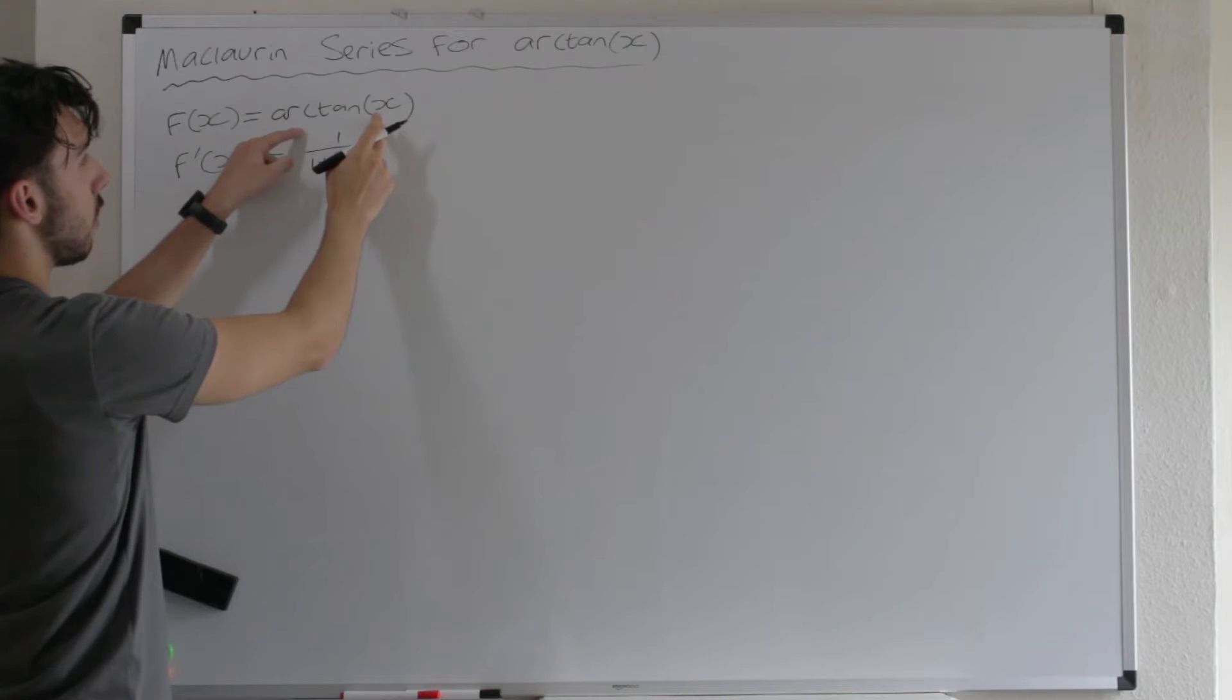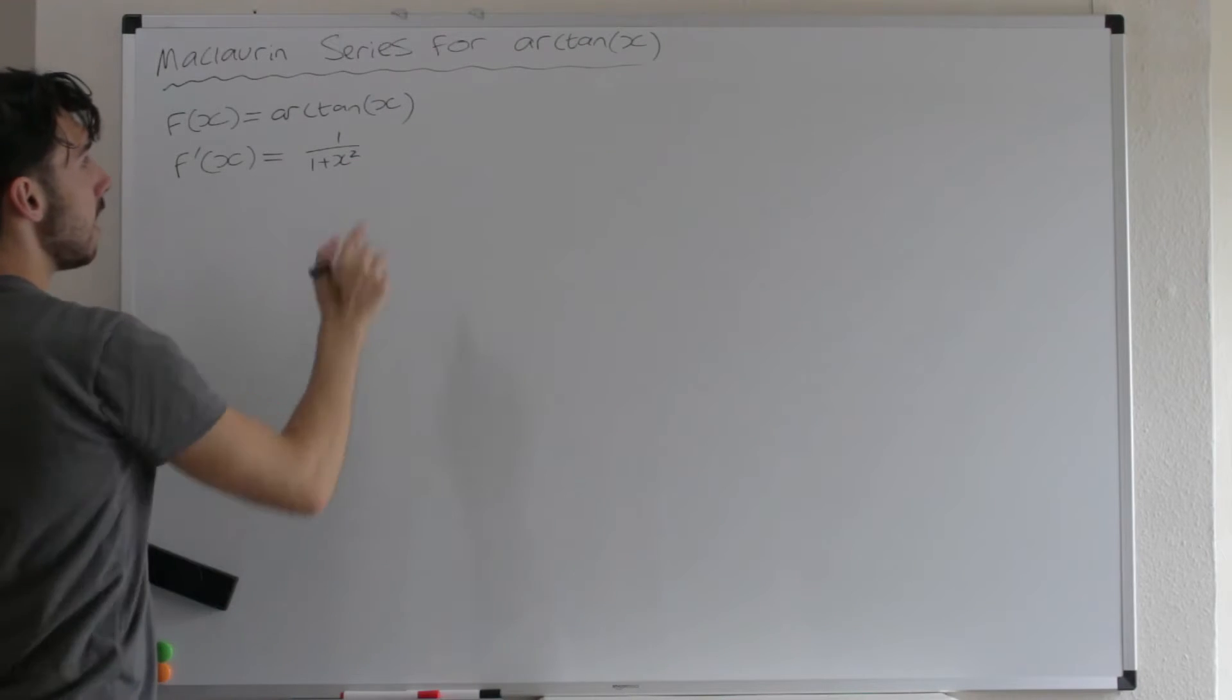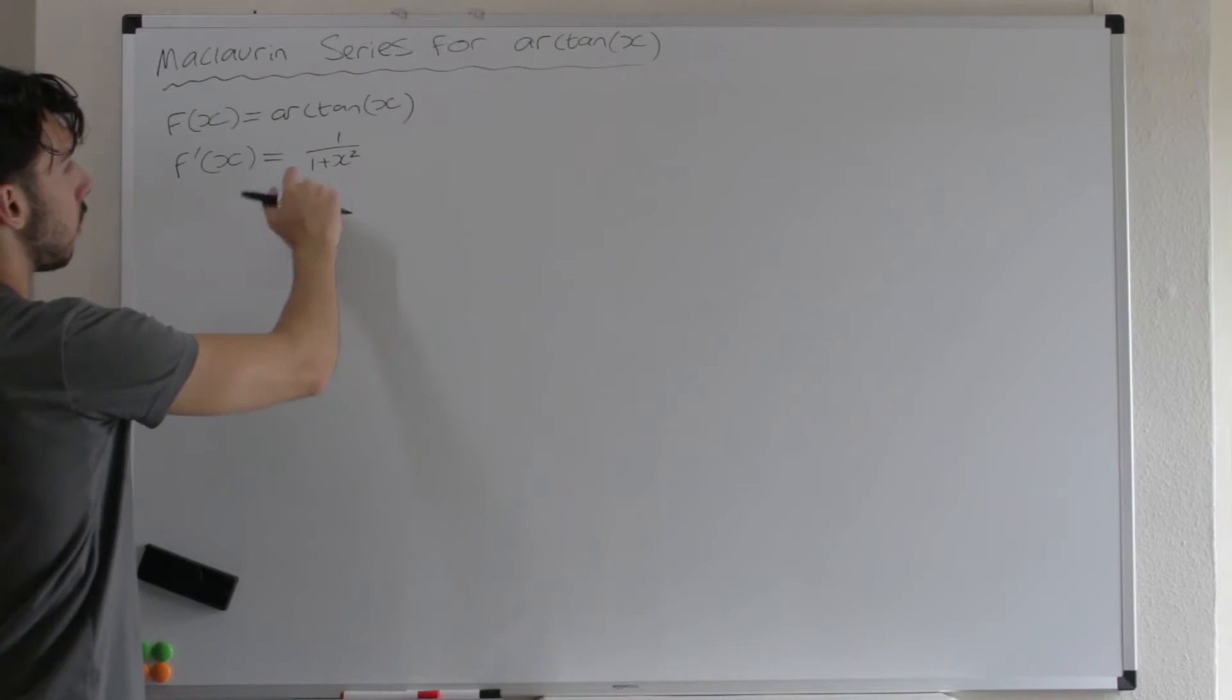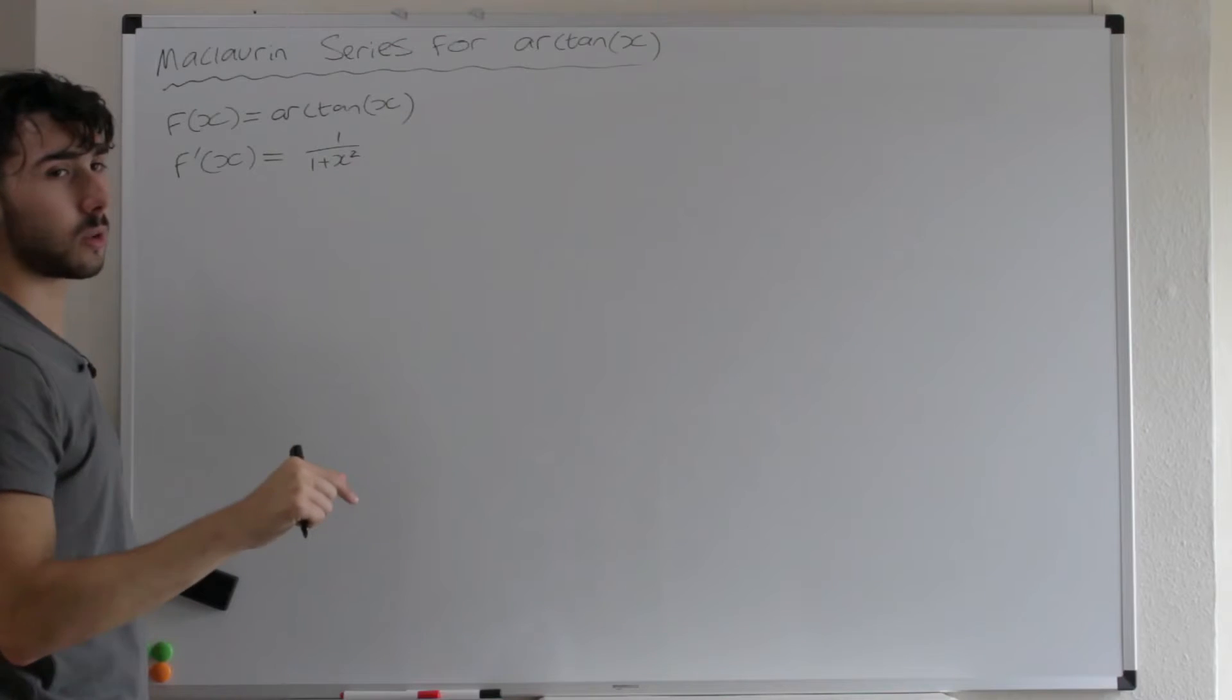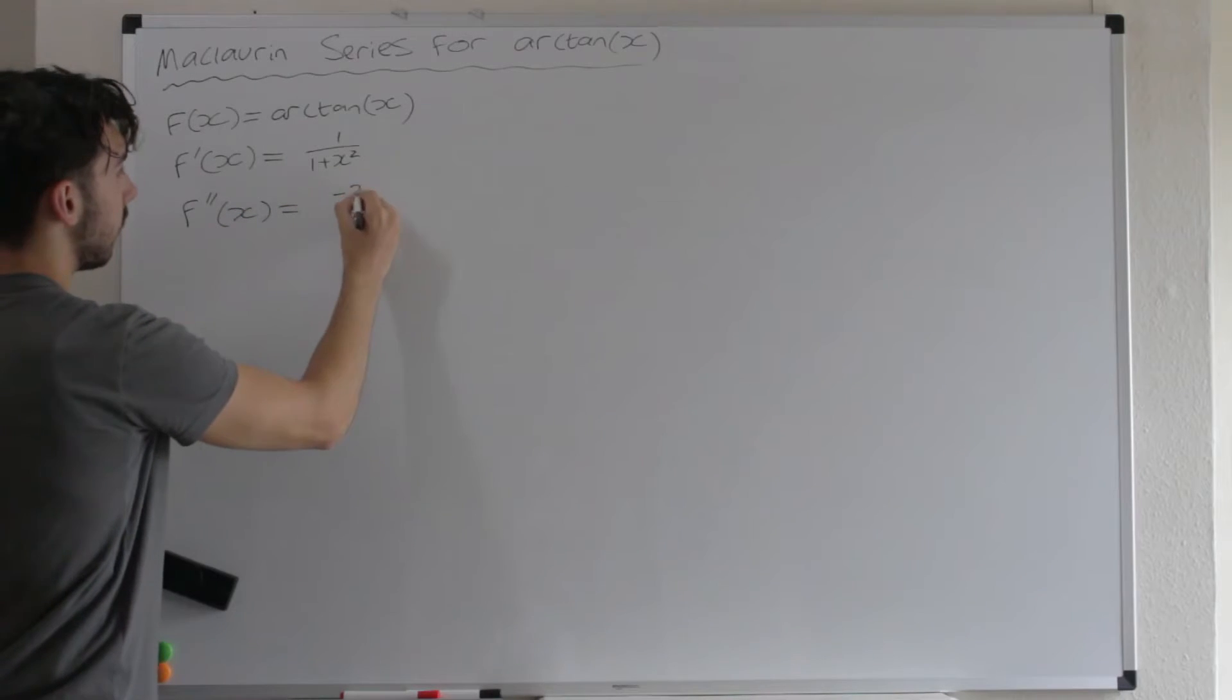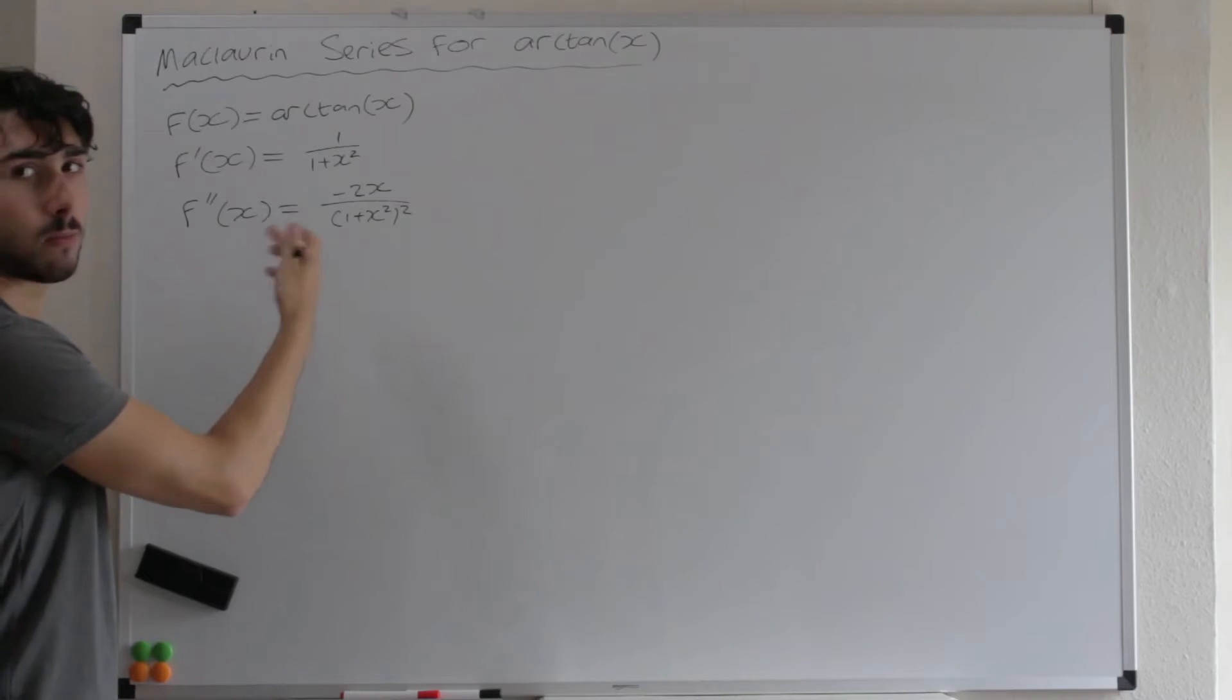Now it's not obvious that you go from here to here when you differentiate. That's why I've put a video link in the description below because I think that's worth showing in and of itself. If you're happy that the derivative of arctan x is 1 over 1 plus x squared, then you would just differentiate again. But if you differentiate 1 over 1 plus x squared, you'd get minus 2x over 1 plus x squared squared. So the second derivative here would be minus 2x divided by 1 plus x squared squared.